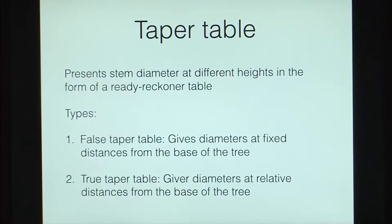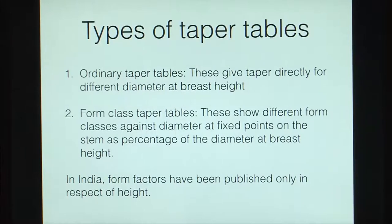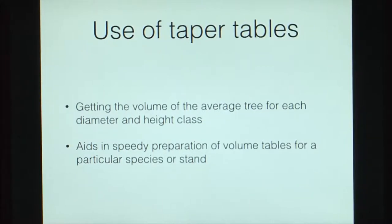We looked at equations of tree form including Behre's hyperbolic formula and Hooger's formula, and also form factor and taper tables. Taper tables have two kinds: false taper tables and true taper tables, and can also be classified as ordinary taper tables and form class taper tables. Taper tables are used to get the volume of an average tree from each diameter and height class, thus preparing a volume table.